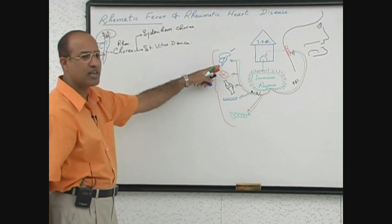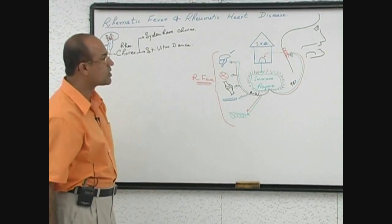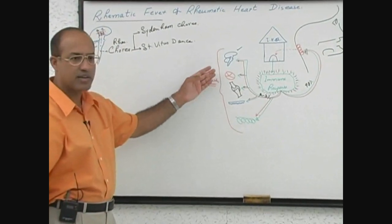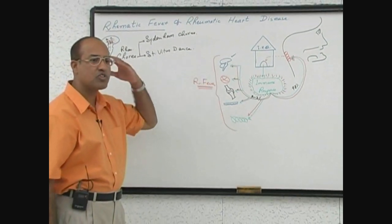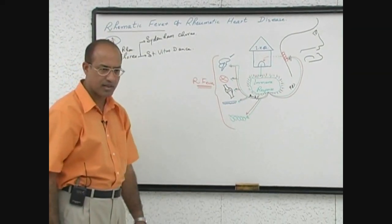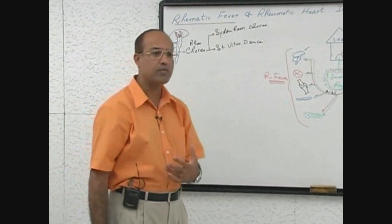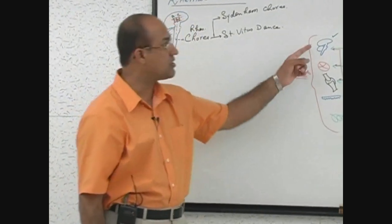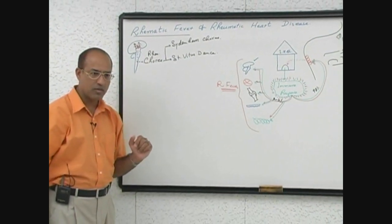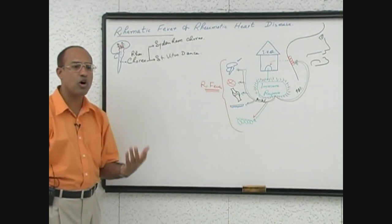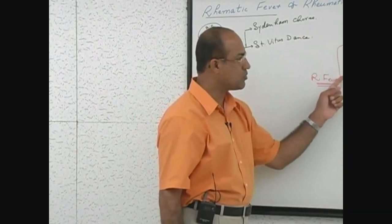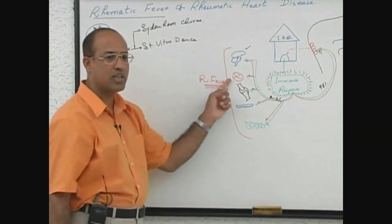But whenever chorea is present, it is very diagnostic. Another important point: once the fever is over and the acute phase has passed, the immune system is no longer damaging the central nervous system and recovery is complete. Once the immune process damages the CNS and the patient develops chorea, once the chorea subsides there is no long-term residual damage to the central nervous system.